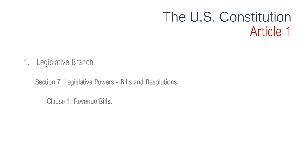Clause 1 is about revenue bills. Basically, it says that all tax and appropriations bills for raising money have to originate in the House of Representatives. The Senate, though, often amends such bills and may even substitute an entirely different bill.